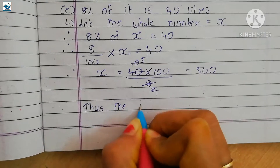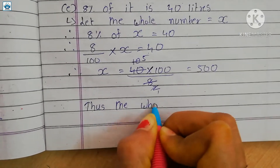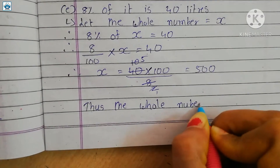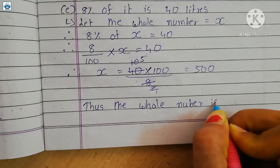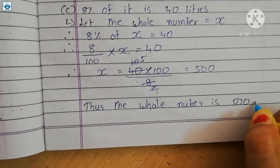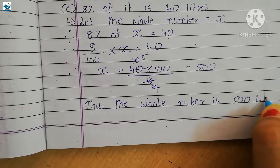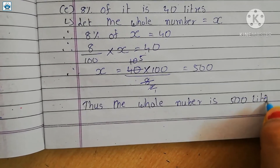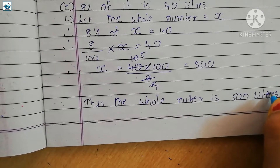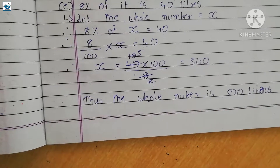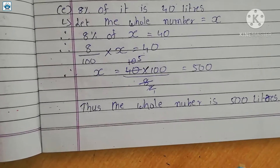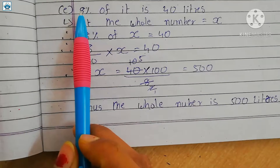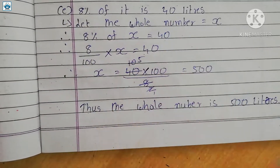So in the last we write down: thus the whole number is 500 liters. That means 500 liters ka 8% is 40 liters.